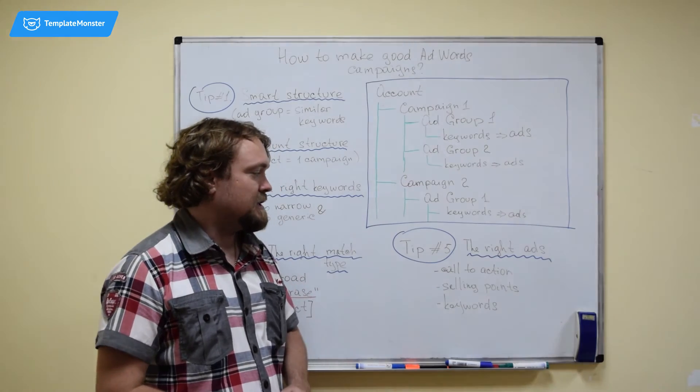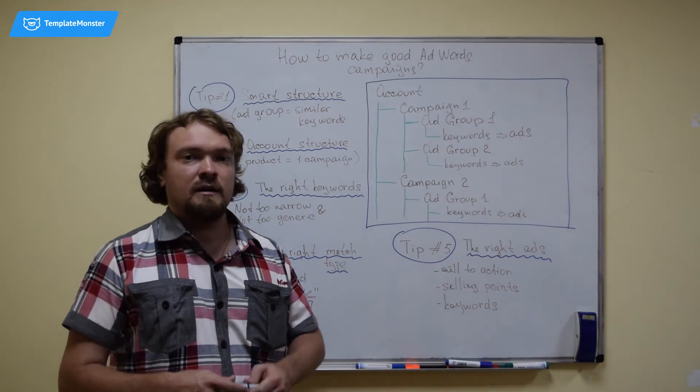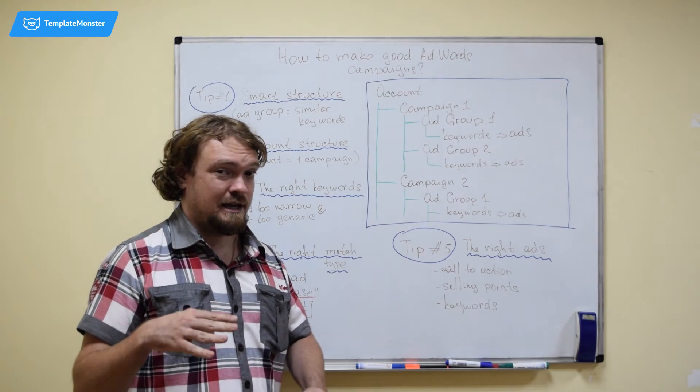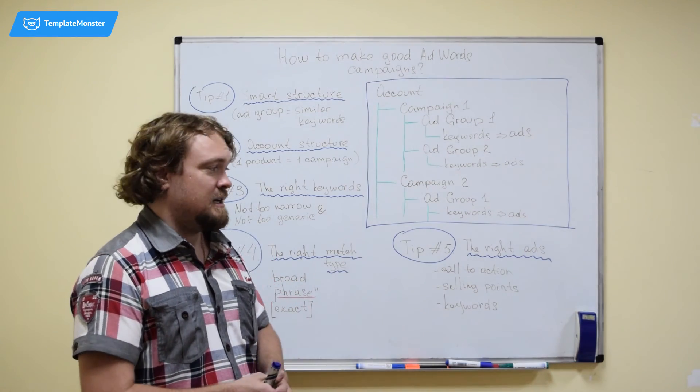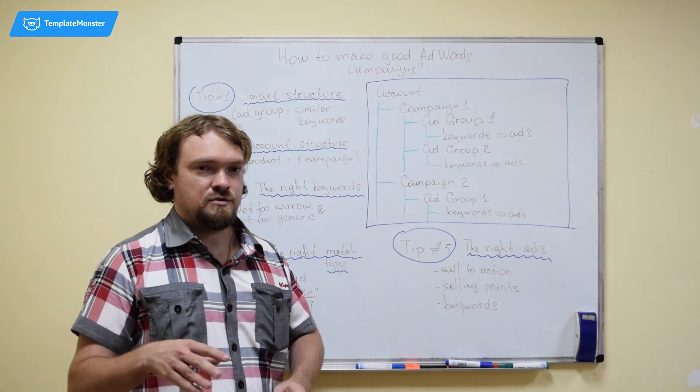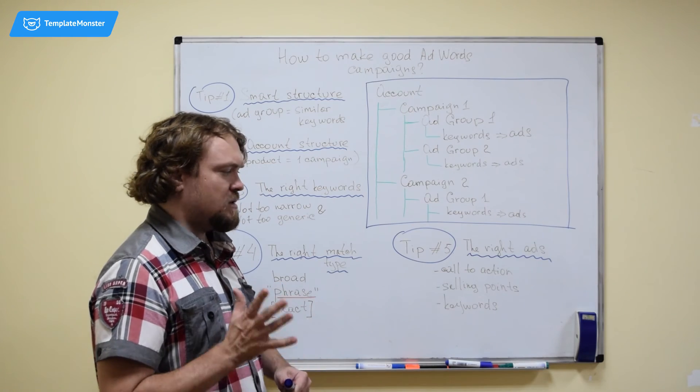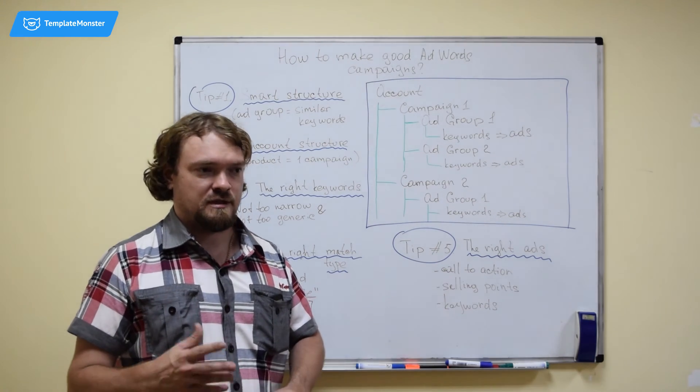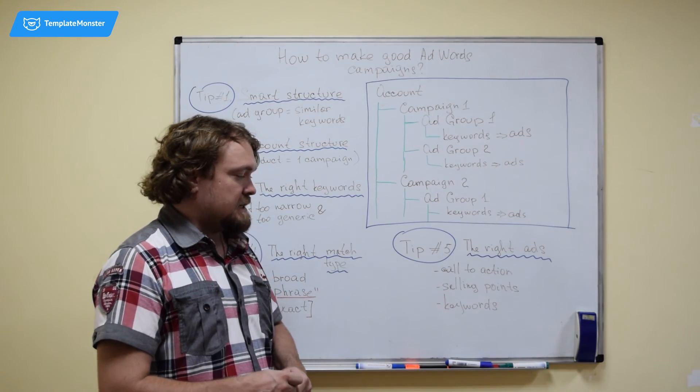And the final recommendation is using the right ads in your campaign. This means that your ad has to have several components that will make it successful, will make people want to click it. You have to have a call to action. And this has to be a call to action that's not too generic. Because if you use click now or click here, this is not exactly a best practice. But if you use something that sounds like choose the one for your business, something that has a verb in it, that's already much better. You also want to have several selling points in your ad like a 10% discount or 5,000 happy clients served or something else that will help your ad stand out from the others in that search page.